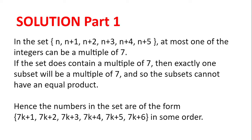Now if the set does contain a multiple of 7, then exactly one subset will be a multiple of 7, because 7 is prime, so one subset will be a multiple of 7, one subset won't be a multiple of 7, and so the subsets cannot have an equal product.